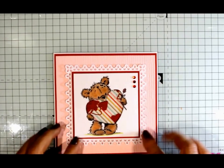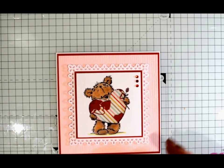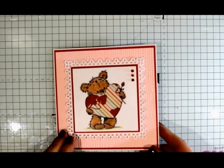The stamp we're using is by Lily of the Valley. It's called James with Big Heart. It's still available on the website now, so if you head over there you'll be able to buy it.